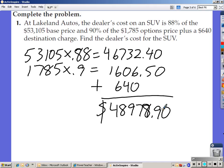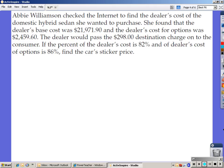Let's go on to example two. Abby Williamson checked the internet to find the dealer's cost of the domestic hybrid sedan she wanted to purchase. She found that the dealer's base cost was $21,971.90 and the dealer's cost for options was $2,459.60. The dealer would pass the $298 destination charge on to the consumer. If the percent of the dealer's cost is 82% and the dealer's cost of options is 86%, find the car's sticker price.